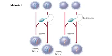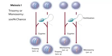When a sperm cell fertilizes an egg that lacks a chromosome, monosomy results. In this scenario, either a trisomy or a monosomy results.